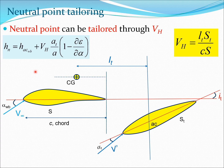You can actually tailor the neutral point to some extent by looking at the equation for HN. It is expressed in terms of HACWB and a component depending on VH and the ratio AT over A. AT and A depend on the airfoil sections selected for the wing-body and tail. You can also control VH, which depends on LT, ST, C, and S — four parameters you can tailor. For example, you can change the distance between the CG and the aerodynamic center of the tail to control LT, or change the tail area ST.